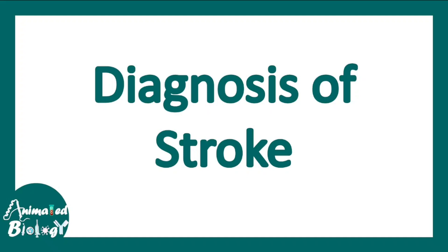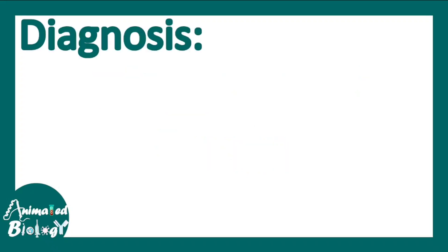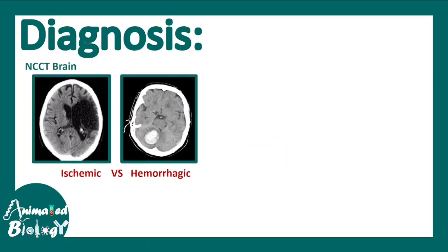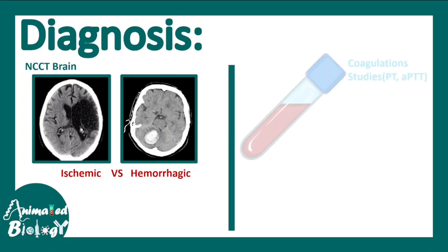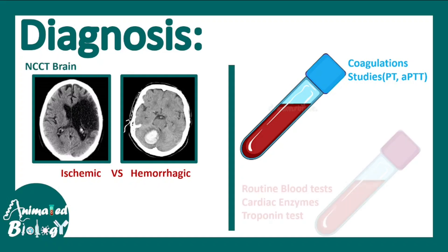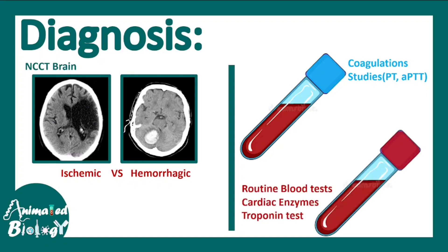To diagnose stroke, we perform a non-contrast CT scan of the brain, which helps us distinguish between ischemic and hemorrhagic stroke. We also perform blood tests like coagulation studies, routine blood work, cardiac enzymes, and troponin to make an etiological diagnosis.